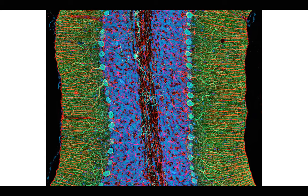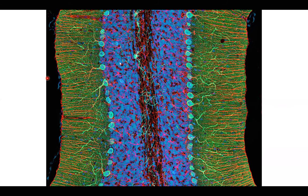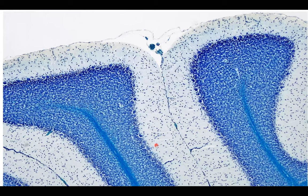This is our cerebellum at both low and high magnification. This fluorescent image is actual real tissue labeled with fluorescent dyes to make each cell light up individually — it's really stunning. The white matter is here — those are the axons. Remember, axons form the white matter. Any other questions on the cerebellum?